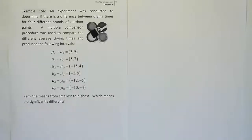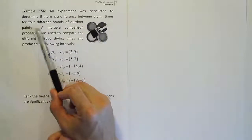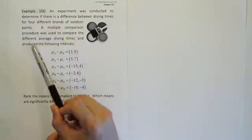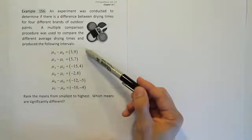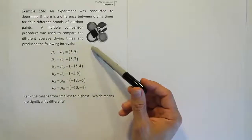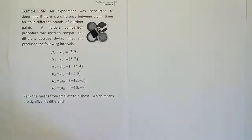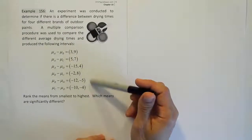Example 156. An experiment was conducted to determine if there is a difference between drying times for four different brands of outdoor paints. A multiple comparison procedure was used to compare the different average drying times and produce the following intervals. We didn't cover how to calculate those intervals because it's quite difficult and time consuming, and the derivation is outside the scope of this basic elementary stats class. However, we can look at computer output or provided intervals and interpret them.